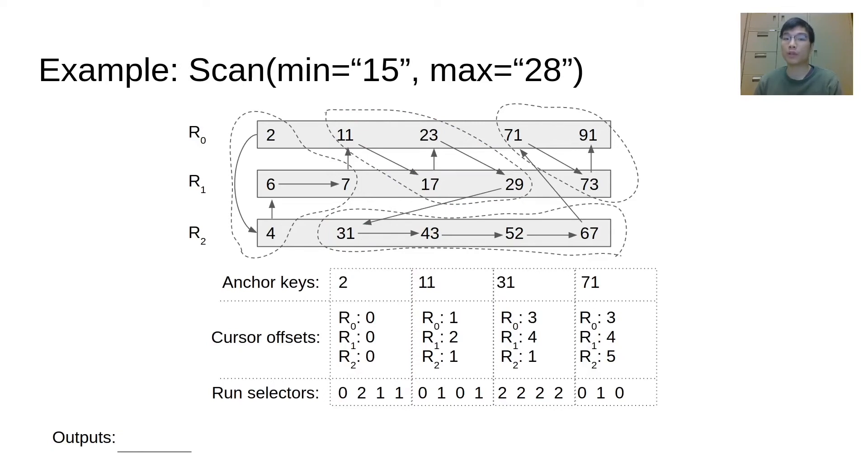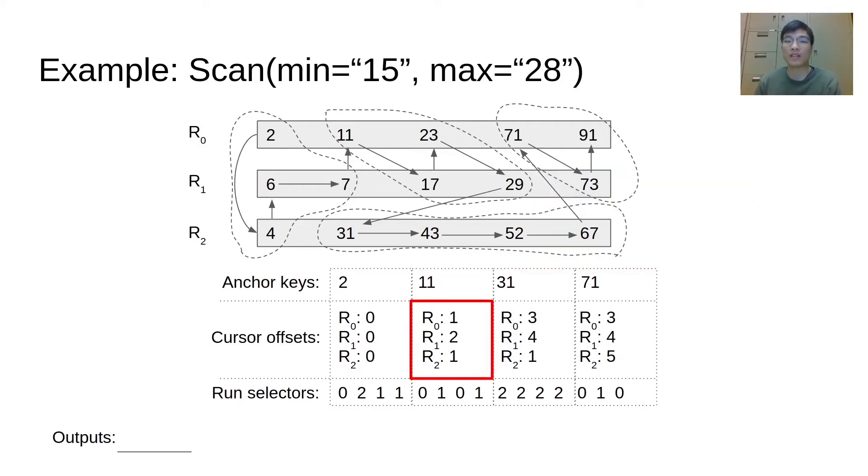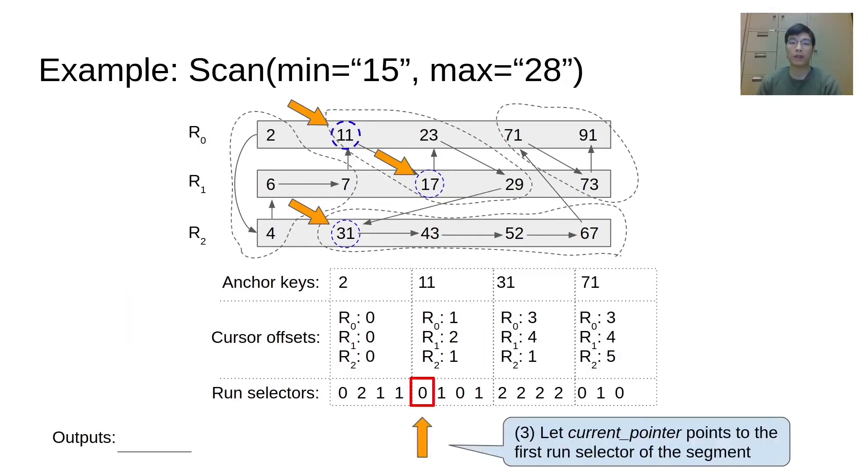Let's see an example of a range query that retrieves the range between 15 and 28 using Remix. The keys between the range will be copied to a user buffer. The first step is to find the target segment that covers the start key. Key 15 is between 11 and 31, so the second segment is selected. The next step is to initialize the cursors according to the cursor offsets, which are 1, 2, 1. So the cursors will be positioned to point to 11, 17, and 31 in the three runs. The current pointer of the iterator will be set to point to the first run selector in this segment. In this case, the iterator will point to R0, which corresponds to key 11 according to the restored cursor offset.